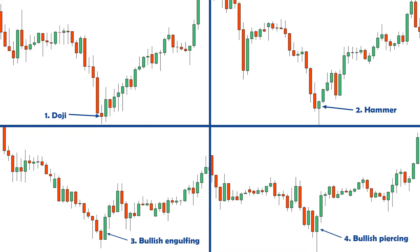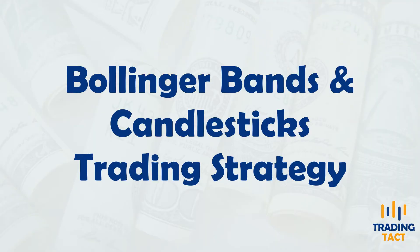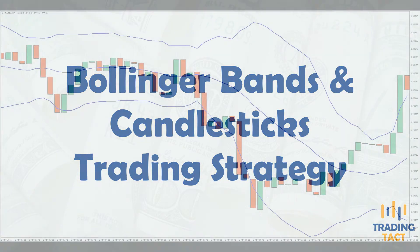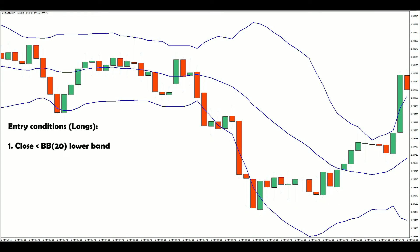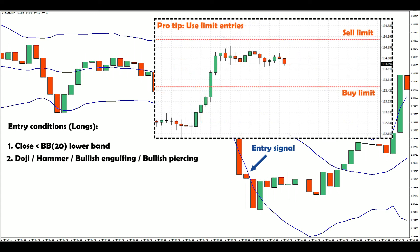We can make a higher probability trade by waiting for these patterns to occur together with a Bollinger Band penetration. For entry conditions on longs, we are looking for a close below the lower Bollinger Band, and we want to see at least one of the four candlestick patterns. This doji here meets those conditions. For mean reversion trading, you should consider the use of limit orders — setting your entry price below the current market price.